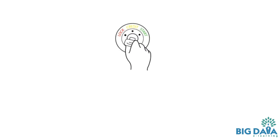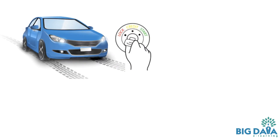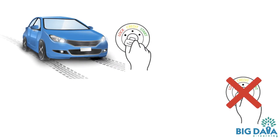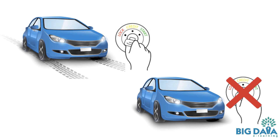Imagine Main Method as a start button in a car. Without having a start button, we can still call it a car, but we cannot start it or drive it. Similarly, without a Main Method, we can compile a Java class or project successfully. However, JVM cannot start executing the project.